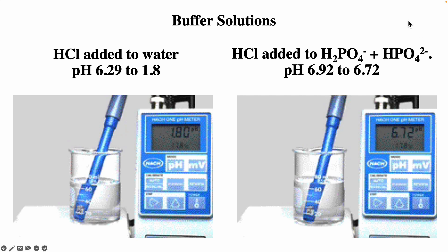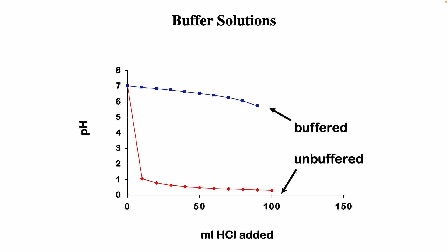The dihydrogen phosphate is the weak acid, and hydrogen phosphate is the conjugate base. It reacts with the added HCl, consuming most but not all of it, so the pH changes a little bit. The buffer solution resists change in pH, but it can't stop the change entirely. On a graph of pH as a function of HCl added, the buffer system shows a gradual pH change while water drops precipitously.